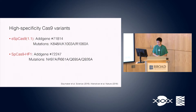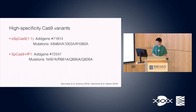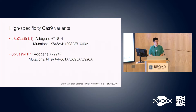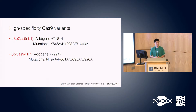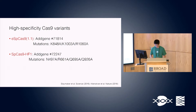There are two high-specificity variants that are available. One that our group developed is called eSpCas9, available on Addgene. Another one was developed by Dr. Keith Jung's group called SpCas9-HF1. I'll talk about our work in engineering eSpCas9 and some guiding principles for designing guides for eSpCas9 today.